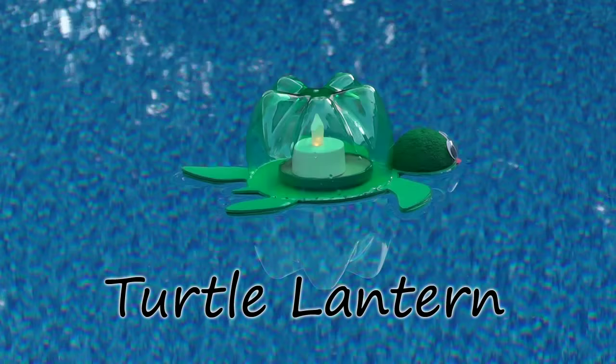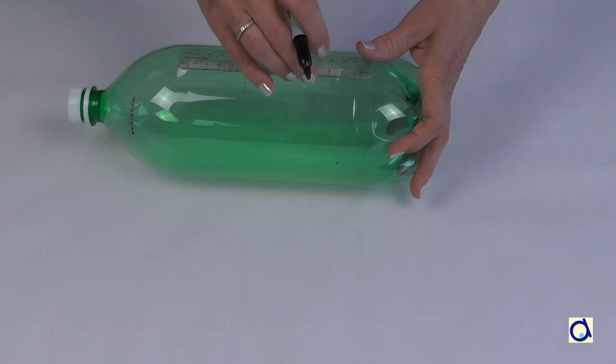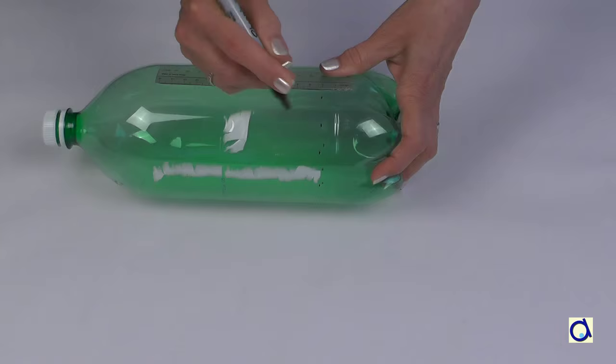Take an empty 2 liter plastic soda bottle. The bottom of the bottle will form the shell of the turtle. Make the shell high enough so that you can put a tea light candle inside. Choose the height that you want for the shell and make markings all around the bottle.